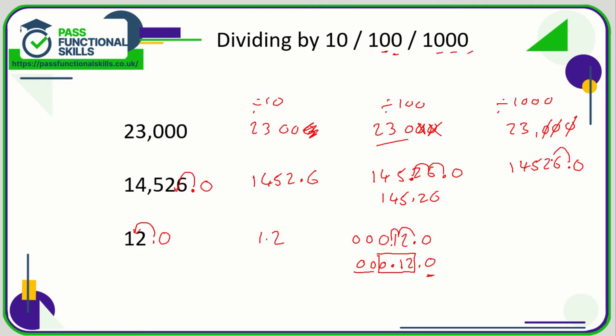Because when you're dividing, you're making the number smaller. So one, two, three. The decimal point goes here: 14.526.